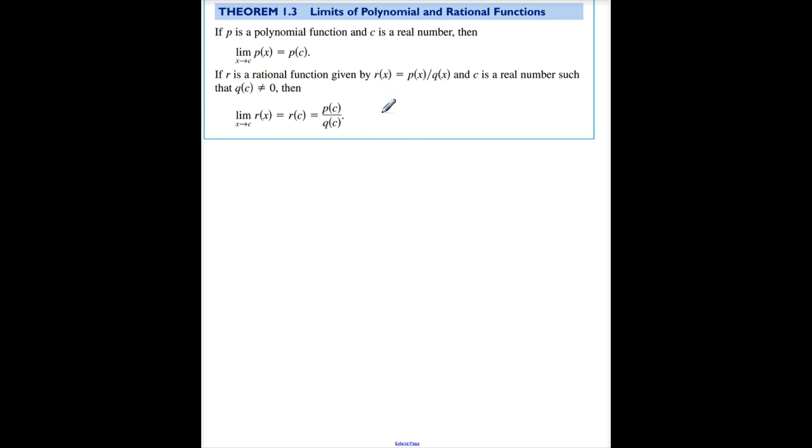Remember, a polynomial function can be written in general form: P(x) = aₙxⁿ + aₙ₋₁xⁿ⁻¹ + ... + a₁x + a₀. It's a very straightforward representation. It turns out if you take the limit as x approaches c of a polynomial, that is equivalent to simply plugging in c.